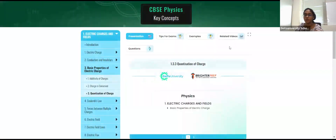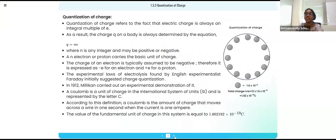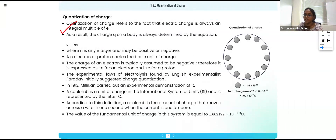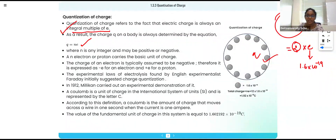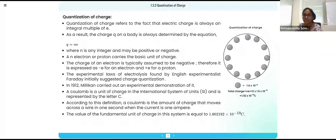The next important property is quantization of charge. Quantization means the charge on any object must be an integral multiple of e — the elementary charge. The charge of an electron is 1.6 × 10⁻¹⁹ coulombs. So the total charge of any body will be two times, three times, or some integer multiple of e. That is called quantization of charge. The SI unit of charge is the coulomb.